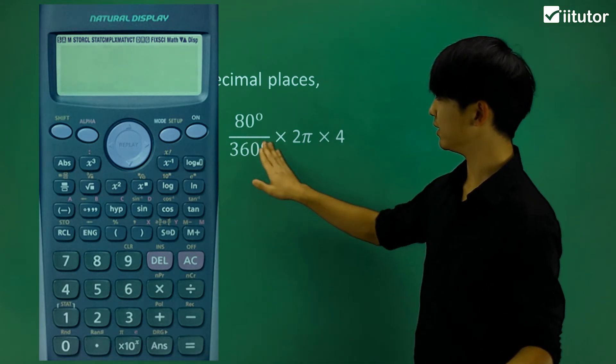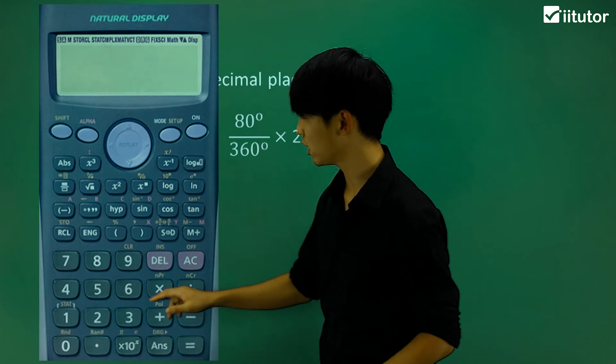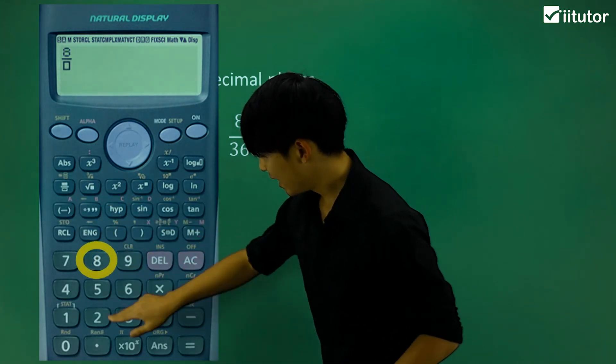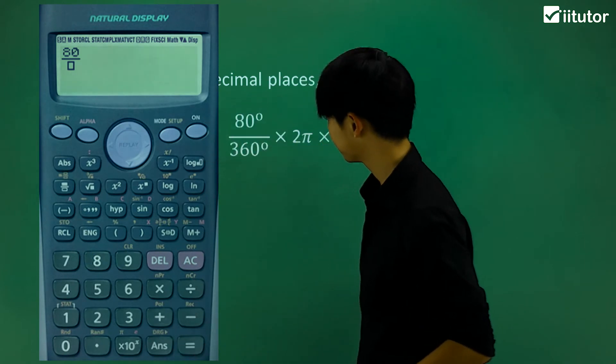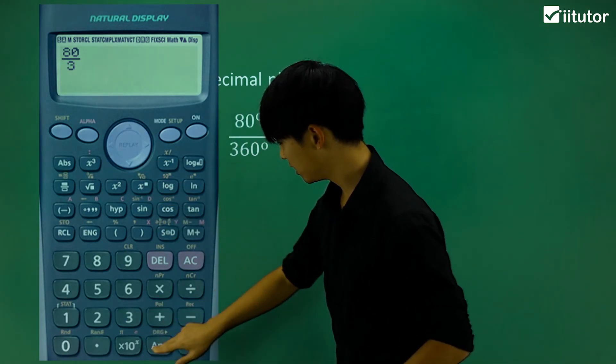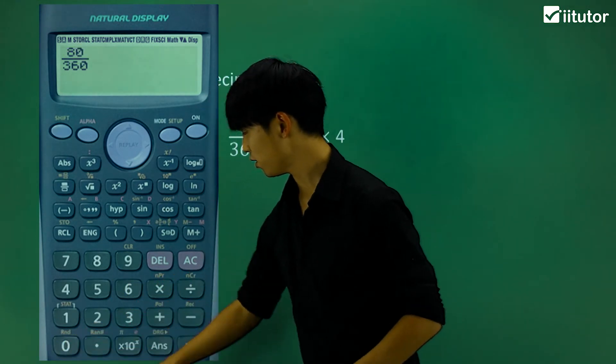The first thing we need to put in is this fraction. So I'm going to press my fraction button and we have 80. Let's go down to the denominator and type 360.